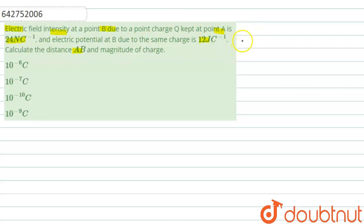So students, in this question, it is given that there are two points A and B and there is a charge Q at this point. Due to this charge, there is an electric field E, which is given as E equals 24 Newton per coulomb, and the electric potential V at this point